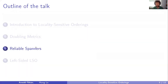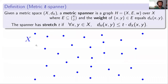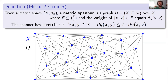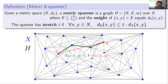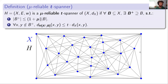Next, let's discuss reliable spanners. A metric T-spanner is a graph on the points of a metric space where the weight of each edge equals the metric distance between its endpoints, and the graph has stretch T: for every pair of points X and Y, the shortest path distance in the graph is at most T times the metric distance. Spanners are a well-studied notion, and we usually want them to be sparse — having a small number of edges.